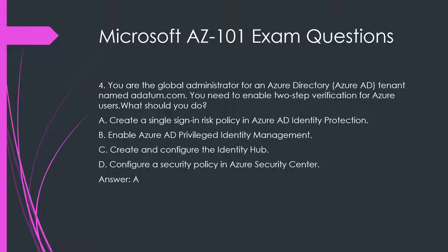A. Create a single sign-in risk policy in Azure AD Identity Protection. B. Enable Azure AD Privileged Identity Management. C. Create and configure the Identity Hub. D. Configure a security policy in Azure Security Center. Answer: A.